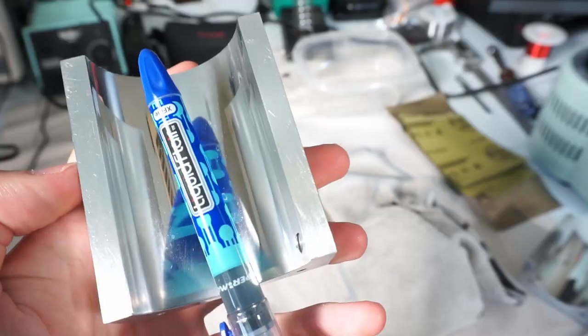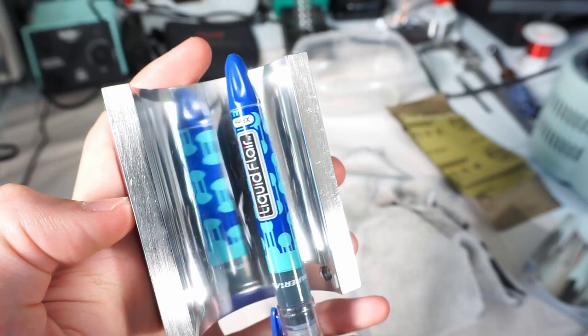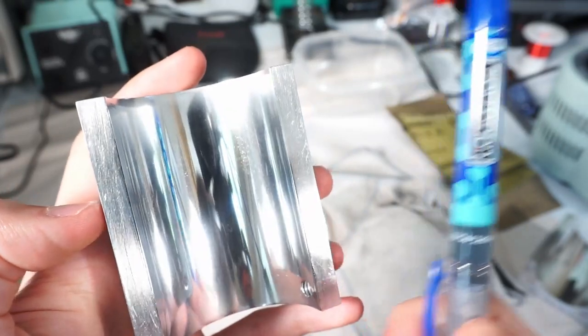Side note here, the shape of the pump chamber is not arbitrary. It is an ellipse with the lamp on one foci and the rod on the other.